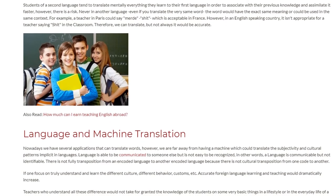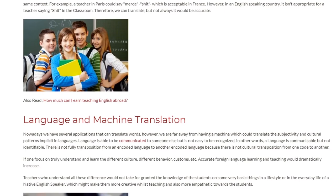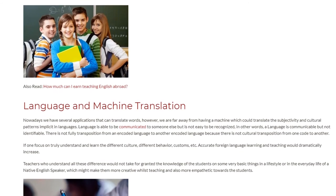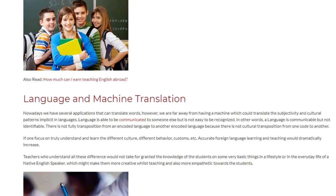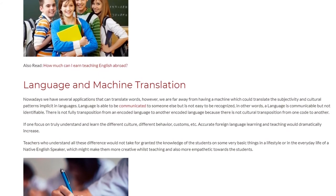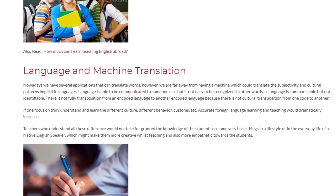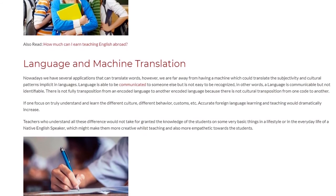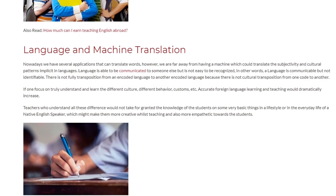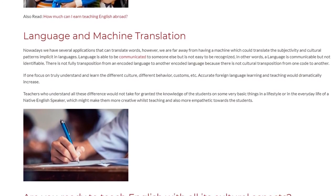Language and Machine Translation. Nowadays we have several applications that can translate words. However, we are far away from having a machine which could translate the subjectivity and cultural patterns implicit in languages. Language is able to be communicated to someone else but is not easy to be recognized. In other words, a language is communicable but not identifiable. There is no fully transposition from one encoded language to another encoded language, because there is no cultural transposition from one code to another. If one focuses on truly understanding different cultures, different behaviors, customs, etc., accurate foreign language learning and teaching would dramatically increase.